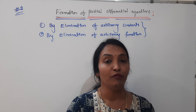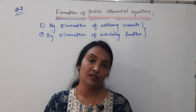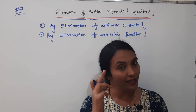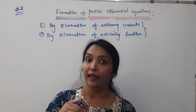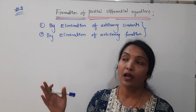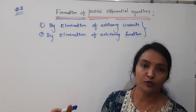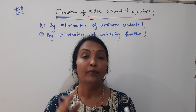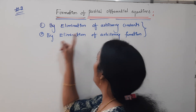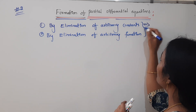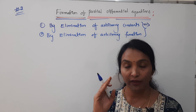First, we discuss elimination of arbitrary constants. There are 3 cases in this method, and they will be identified based on the relationship between the number of arbitrary constants and independent variables.